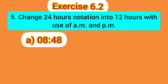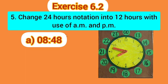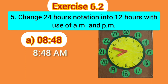Now, question number 5 from exercise 6.2: Change 24 hour notation into 12 hours with the use of AM and PM. Part A is 8.48. So 8.48 in 24 hour notation is the morning time. In 12 hour notation, AM is used for morning timings. So we will write the answer 8.48 AM because it is the time in the morning.